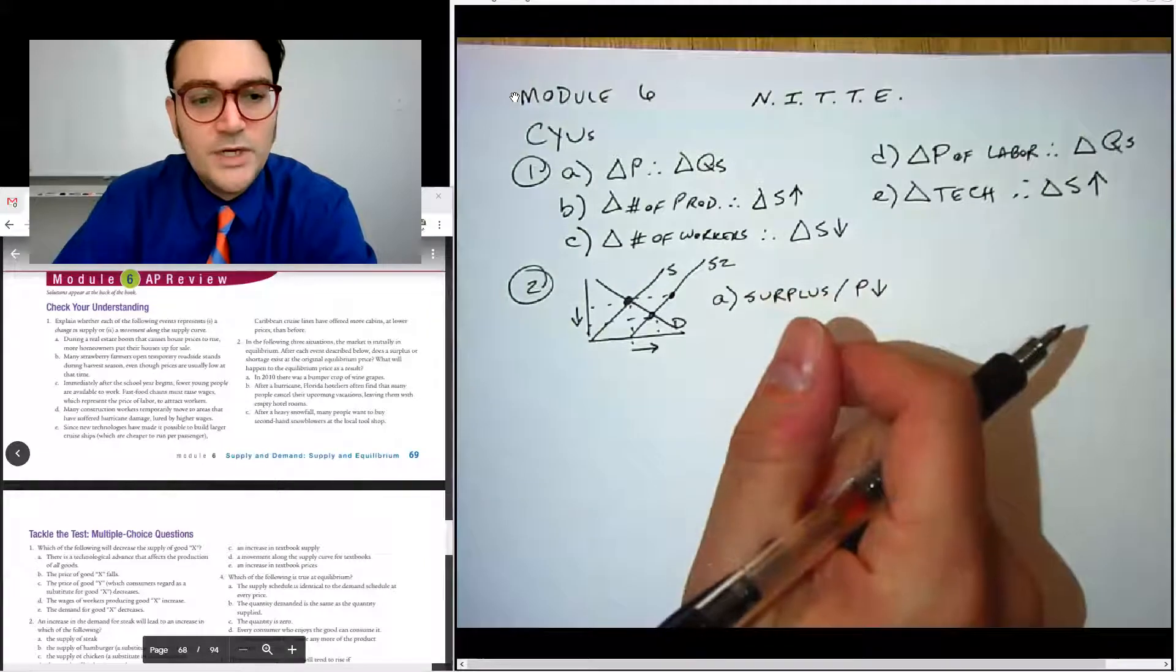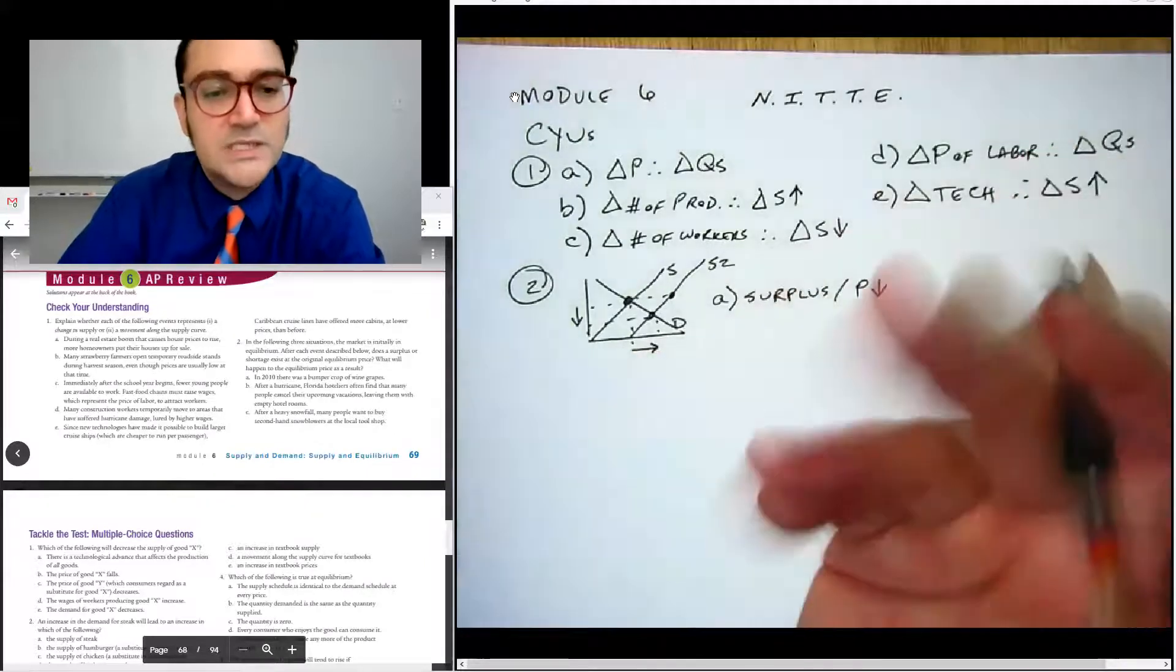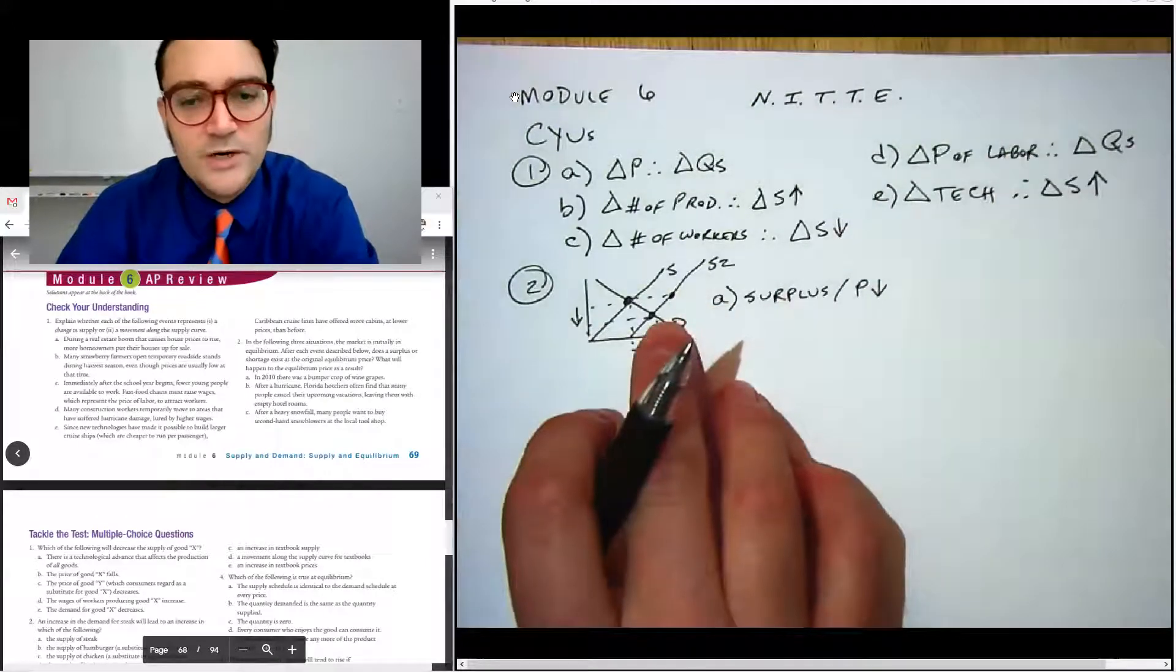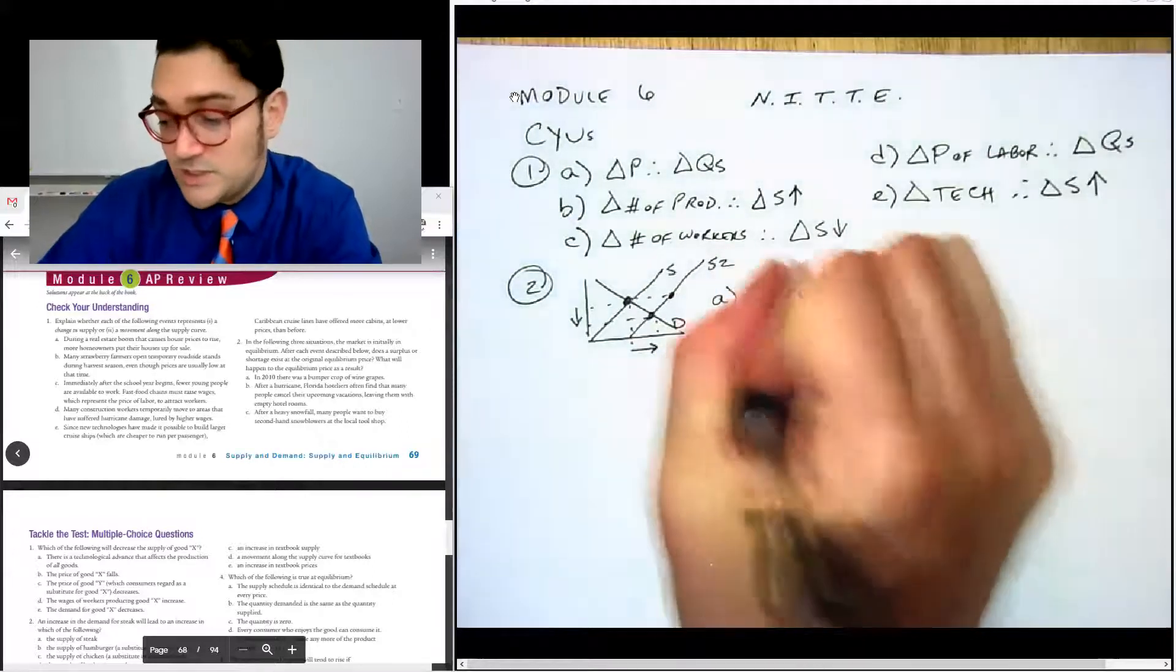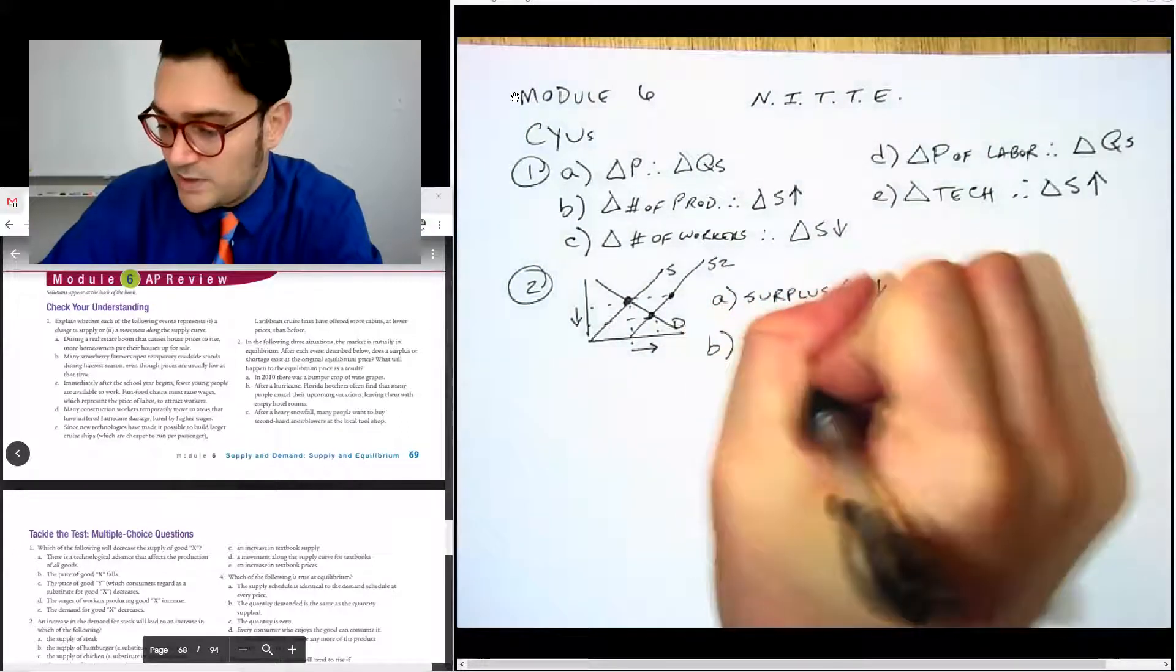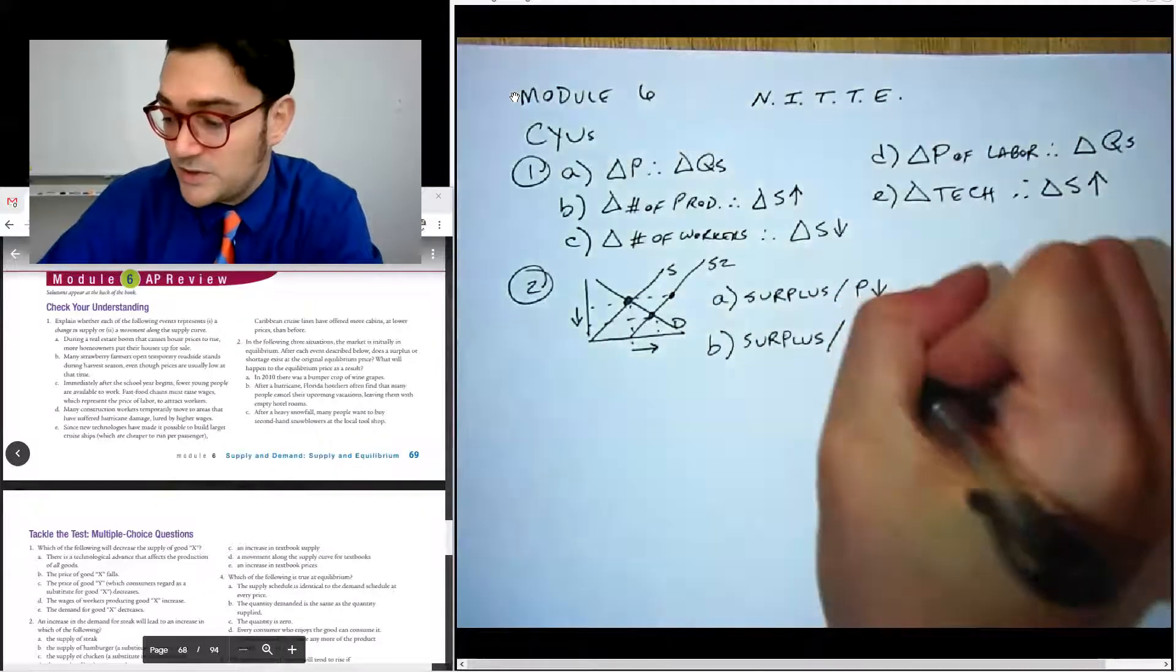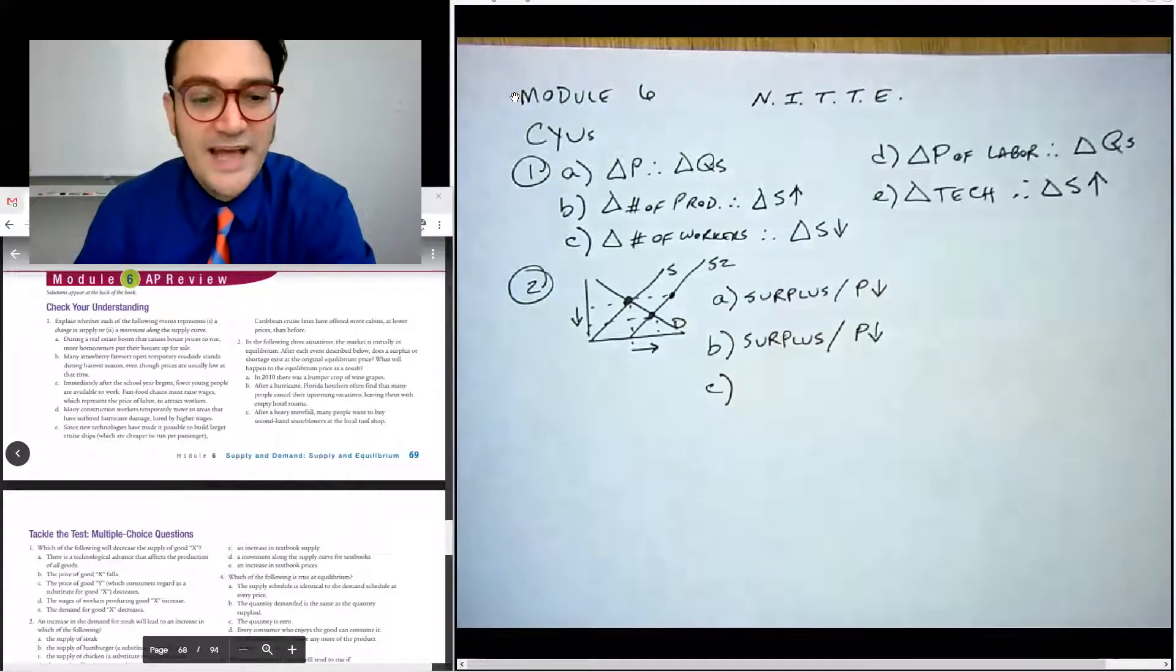For B after Hurricane Florida, hoteliers often finally have too many, that people cancel their vacations, leaving them with empty hotel rooms. So it's kind of the reverse of this problem where the demand falls unexpectedly for it. And in which case you still have a surplus because there's not enough demand for your product. And so eventually they will lower the prices.